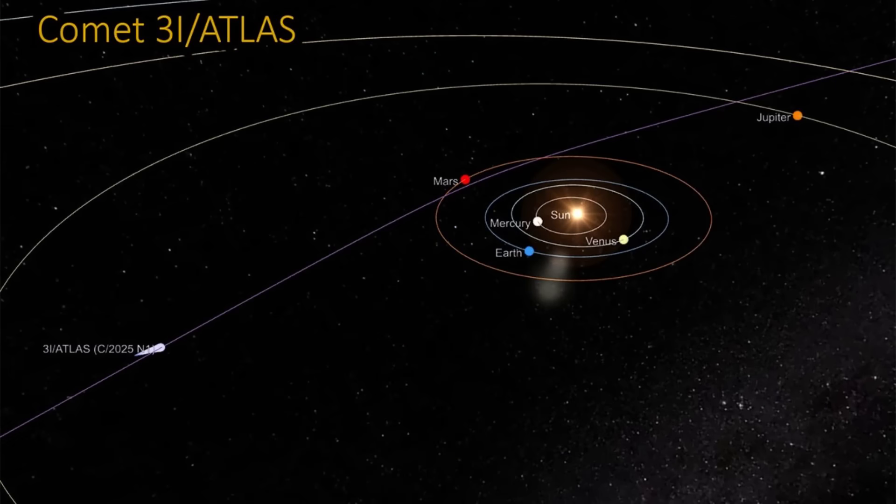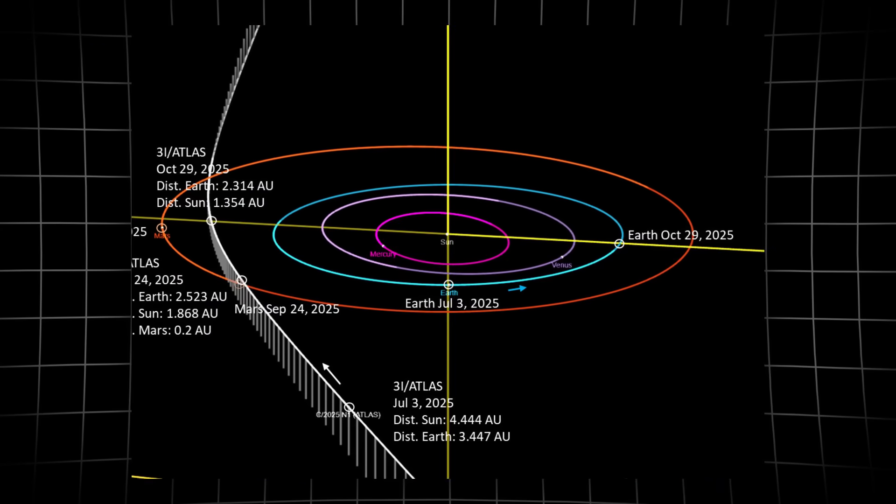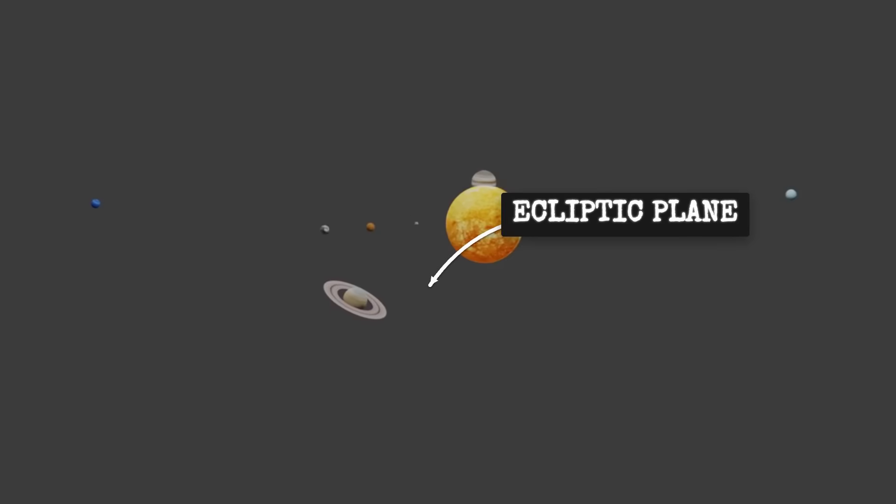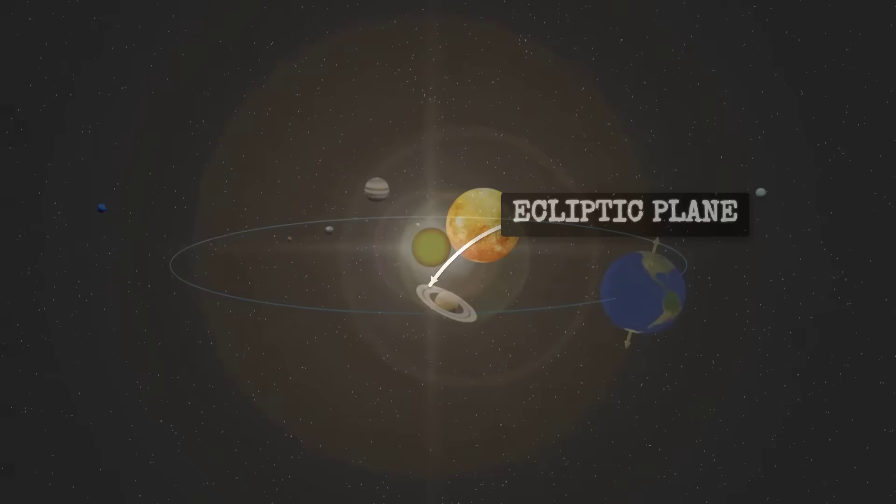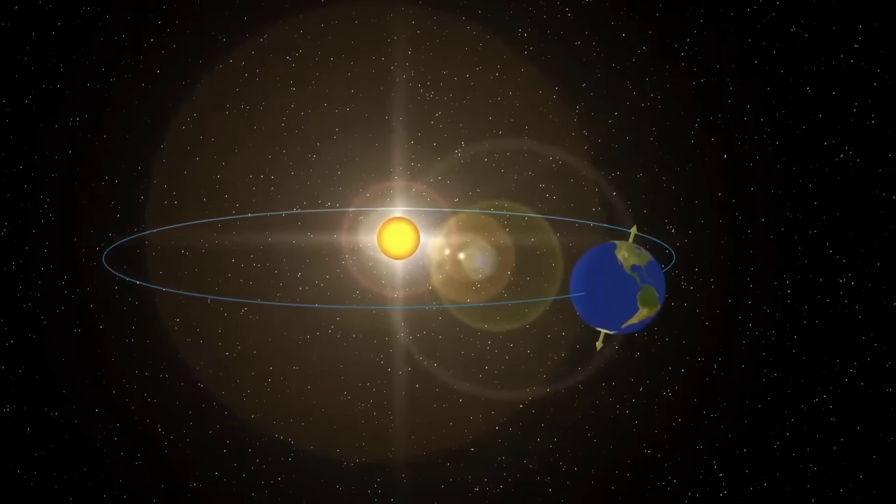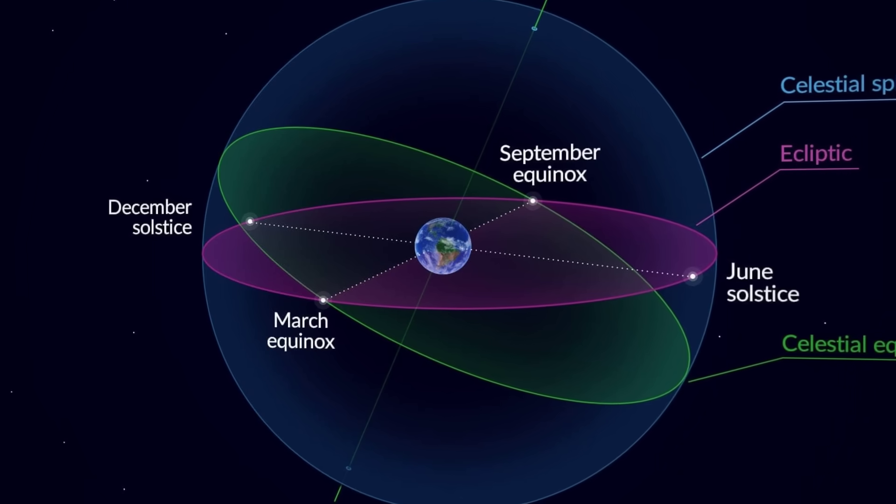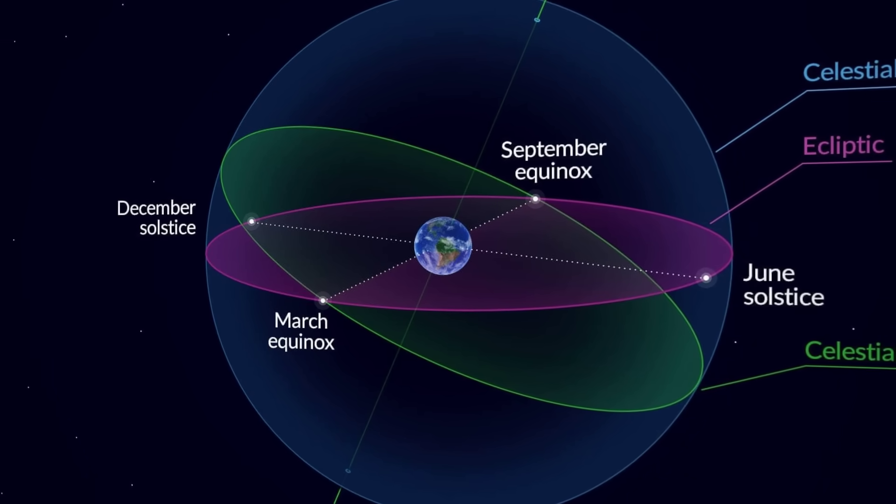What makes this discovery so remarkable is first, its trajectory. This object is traveling on a hyperbolic orbit, meaning it came from outside our solar system, but it's aligned within just 5 degrees of our ecliptic plane. That's the flat disk where all our planets orbit. For an interstellar visitor to arrive so precisely aligned is statistically unusual.